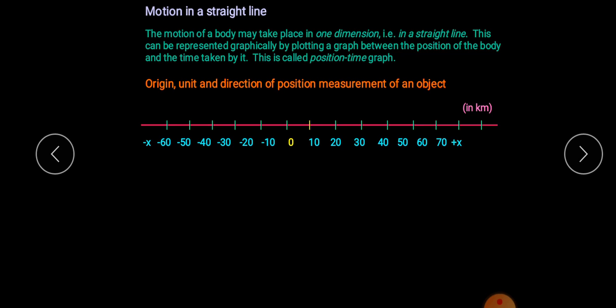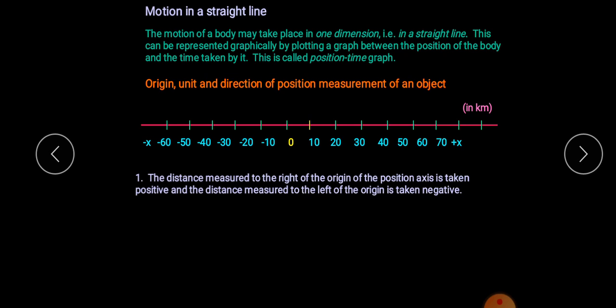This is a number line. Just like a number line, there is a point 0, and there are marks 10, 20, 30, 40, 50, 60, and so on to the right side, and towards the left: minus 10, minus 20, minus 30. The distance measured to the right side of the origin is taken as positive, and the distance measured to the left of the origin is taken as negative.